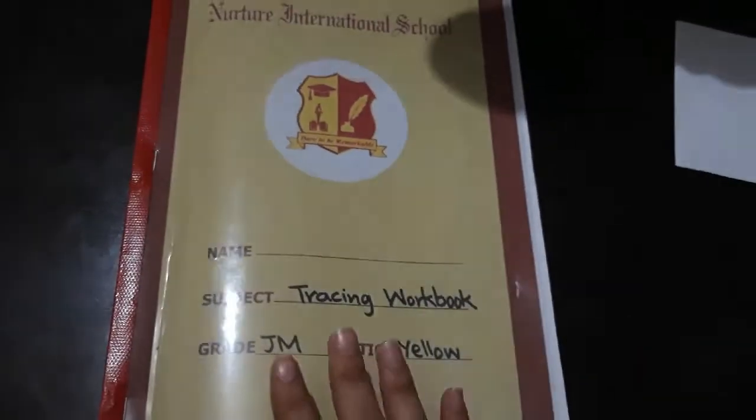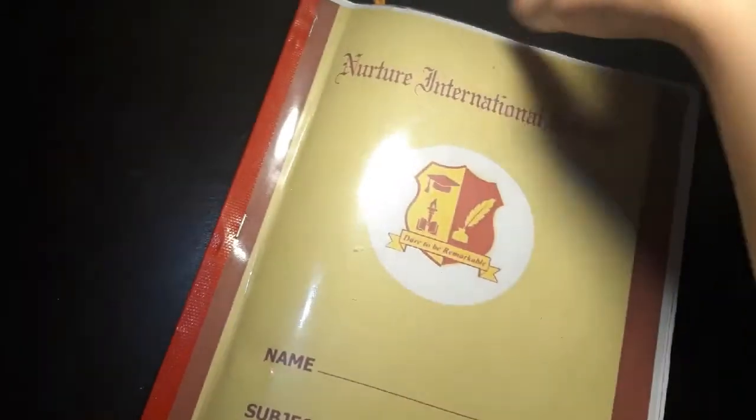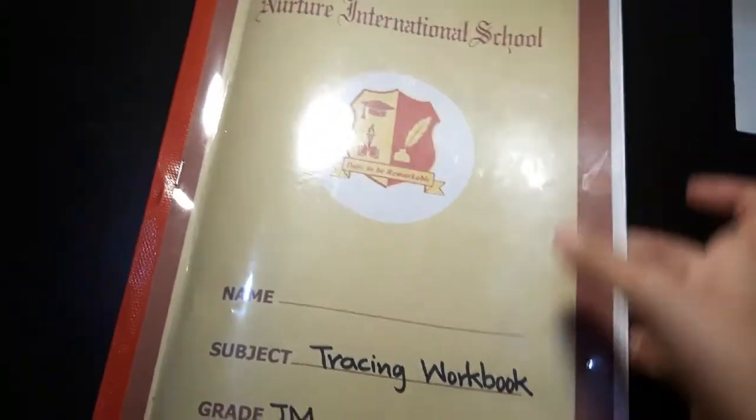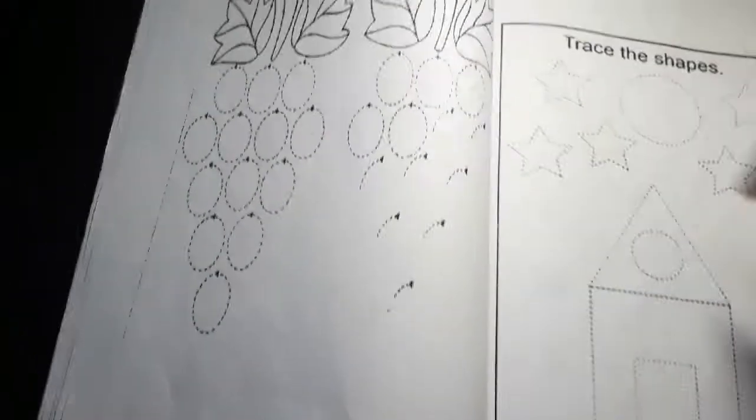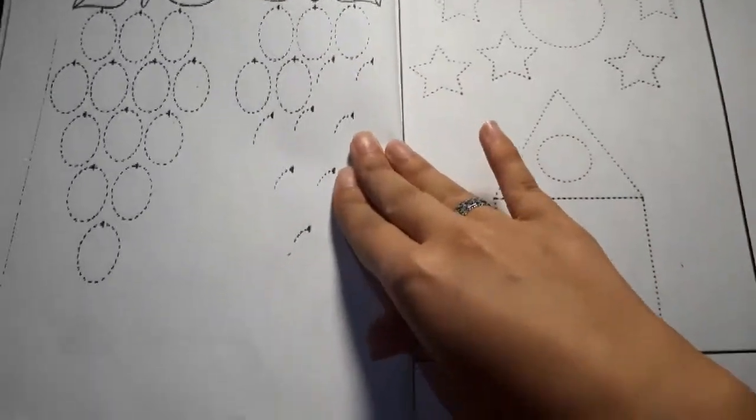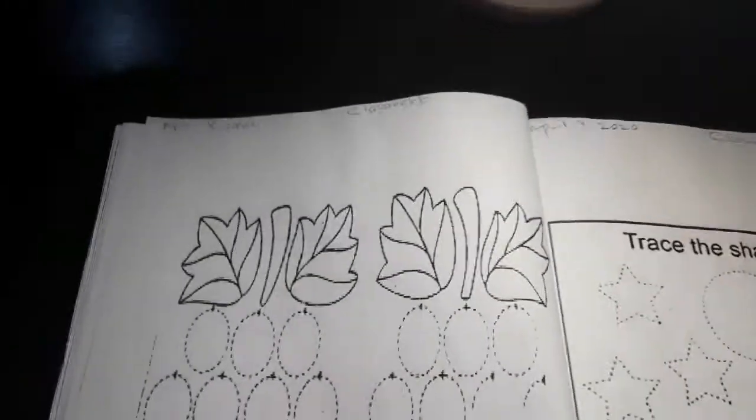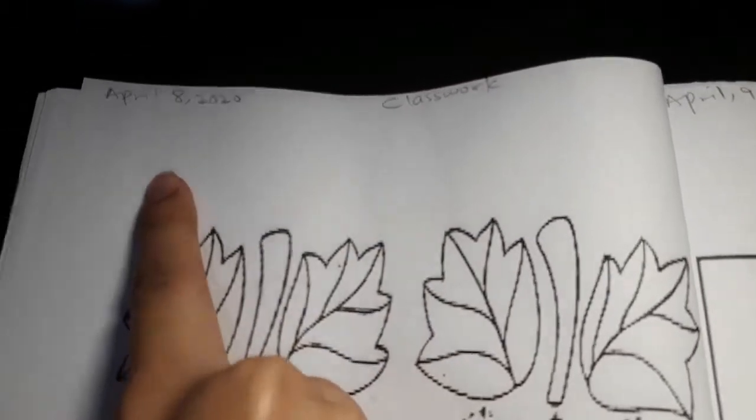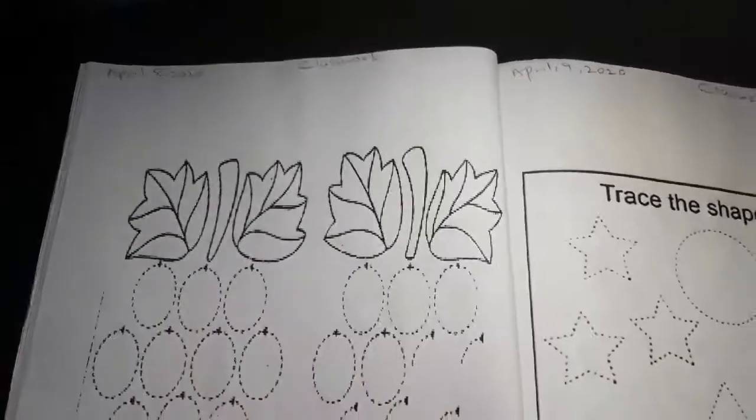Let us get started with tracing from the tracing workbook. Today we have page number 20 to trace. So first thing first, you have to write down the date and classwork, which is April 8th. Today we have to trace these circles and color the leaves.